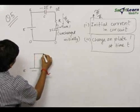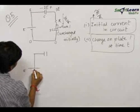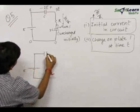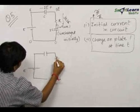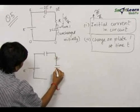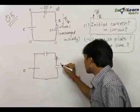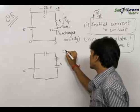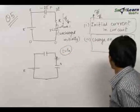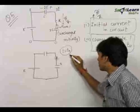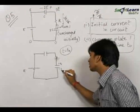The circuit has a battery with EMF E, a capacitor with capacitance C, a resistance R, and a capacitor with capacitance 2C. Let a charge q develop on this plate of the capacitor 2C after time t. Let this general time be t-naught, and let the charge on this plate of the capacitor be q.